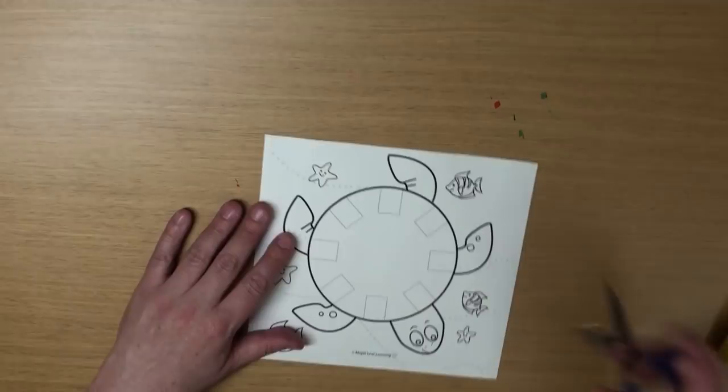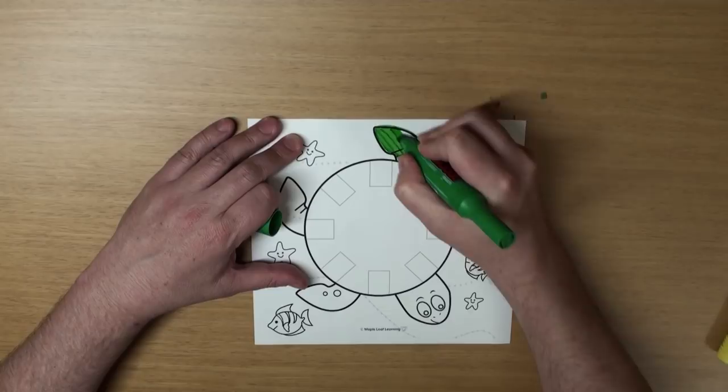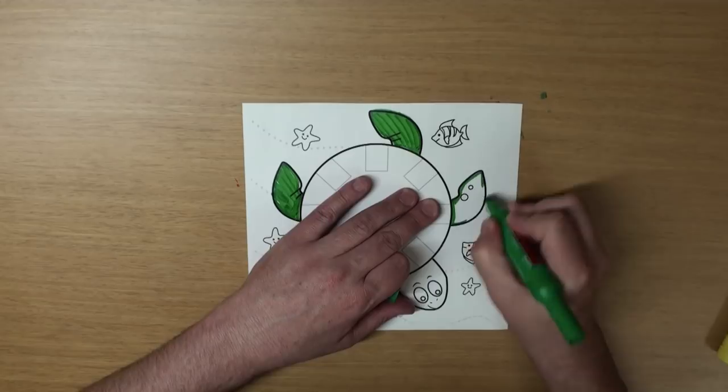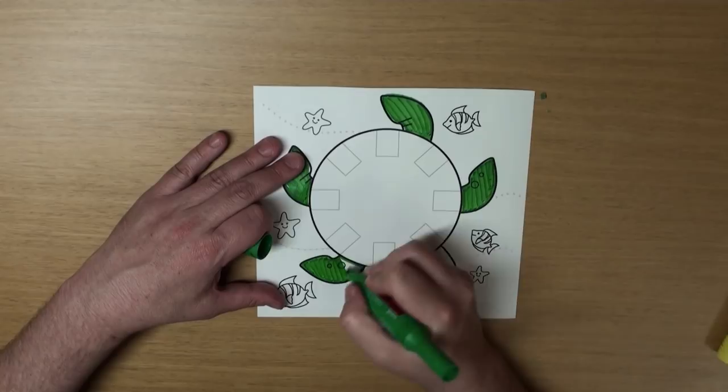Now let's color the turtle. I think I will color his legs green. How many legs does he have? That's right, he has four. And let's color his head green too, okay? Yeah.